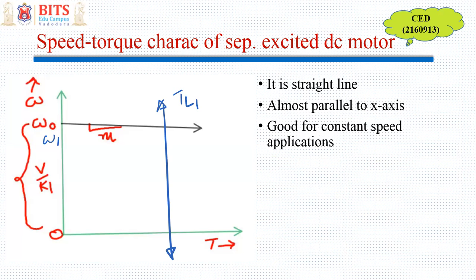Now suppose suddenly the load reduces. The new speed ω2 is almost very near to ω1, so there is not much variation. ω2 approximately equals ω1. For constant speed applications like lifts, escalators, or conveyor belts where load variation occurs but you don't want speed to vary much, this type of characteristic is very useful.